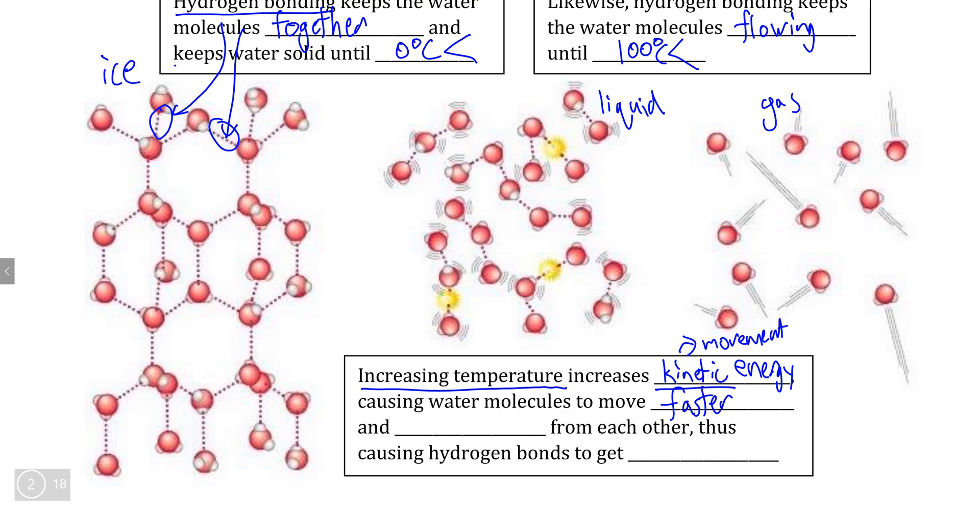And if the molecules are moving faster, that means that the molecules are also going to move farther away from each other. And by the time water becomes a gas, the water molecules are moving too quickly and are too far apart from each other for hydrogen bonds to be able to form.